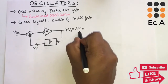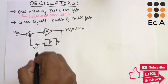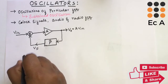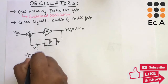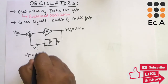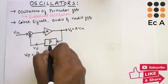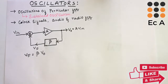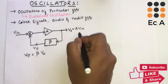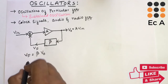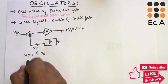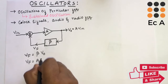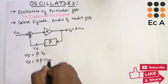V0 can be written as A·Vin. Now let us write the equation for Vf. Vf will be equal to β·V0, which equals β·A·Vin. Substituting, it becomes Vf is equal to A·β into Vin.